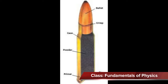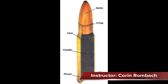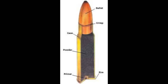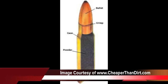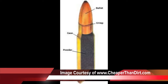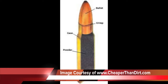Here we have a basic diagram of a cutaway of a bullet. At the top is the bullet itself — this is the projectile that's going to leave the weapon system. Below that is the crimp, which is basically just a tapered part of the case. The case is just that, a case that contains all the components that are going to set our bullet in motion.